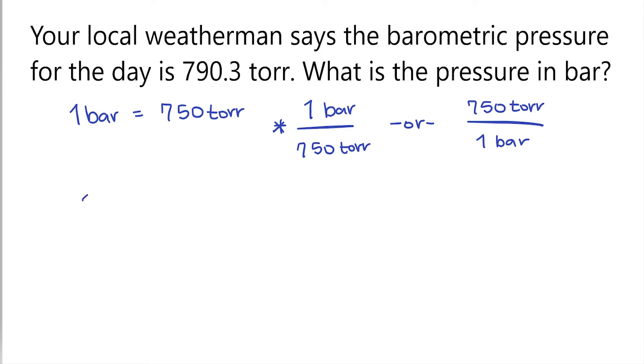Now let's use the information from the question to solve this. So we have 790.3 torr. Next we're going to multiply by our fraction. So for every one bar, we have 750 torr.